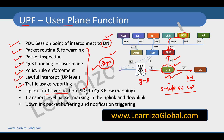All these functions — traffic verification, SDF to QoS flow mapping, transport level packet marking, downlink packet buffering, and notification triggering — are typically done by the UPF. That's all for this video. In the upcoming video we are going to talk about some more network functions. Thank you very much and see you in the next video.